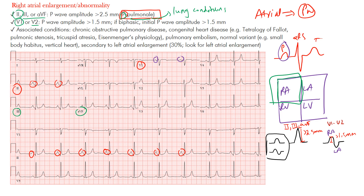An important point: these criteria suggesting right atrial enlargement require sinus rhythm to be in place. When the criteria were initially developed, it was presumed the patient was in sinus rhythm — meaning the rhythm originated from the sinus node in the right atrium. That's why you tend to see peaking or heightening of the initial portion of the P-wave, because the right atrium depolarizes before the left atrium.